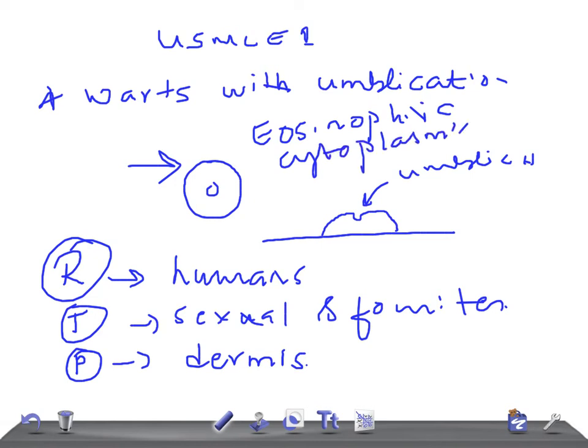So these are the important points you should look for in USMLE case scenarios. What do you need to look for? Umbilication, then you look for eosinophilic cytoplasmic inclusion bodies, because in USMLE examination they will give the history. Thank you so much for watching this video. Take care.